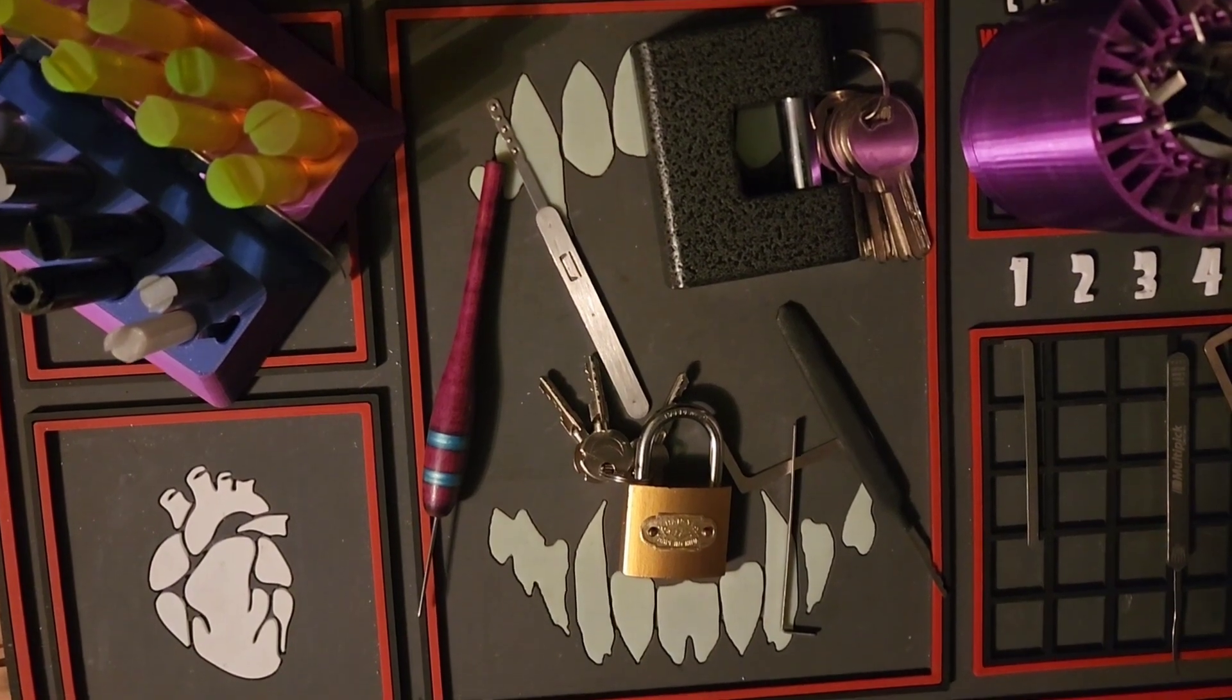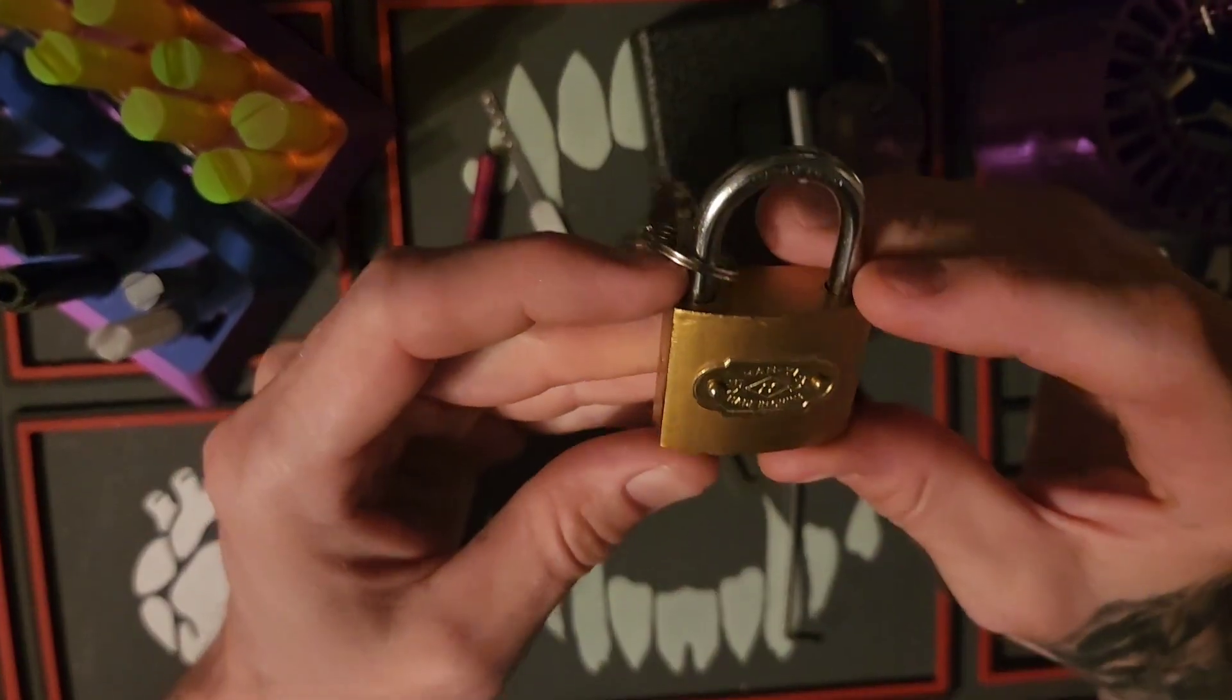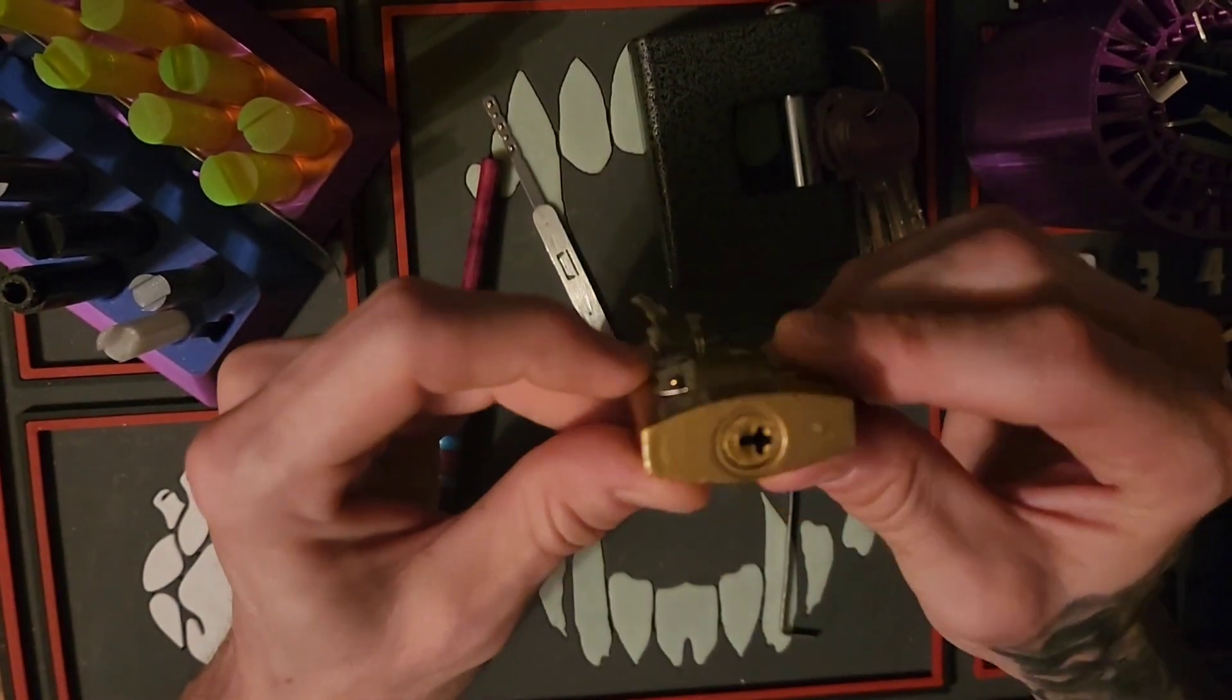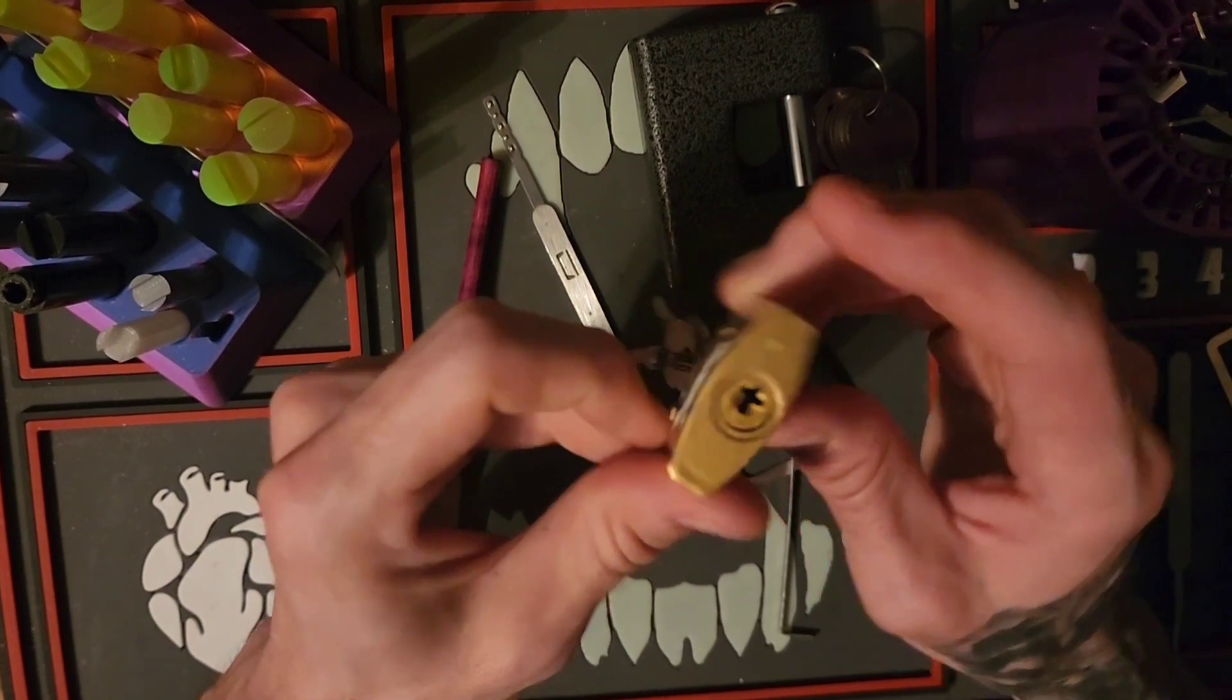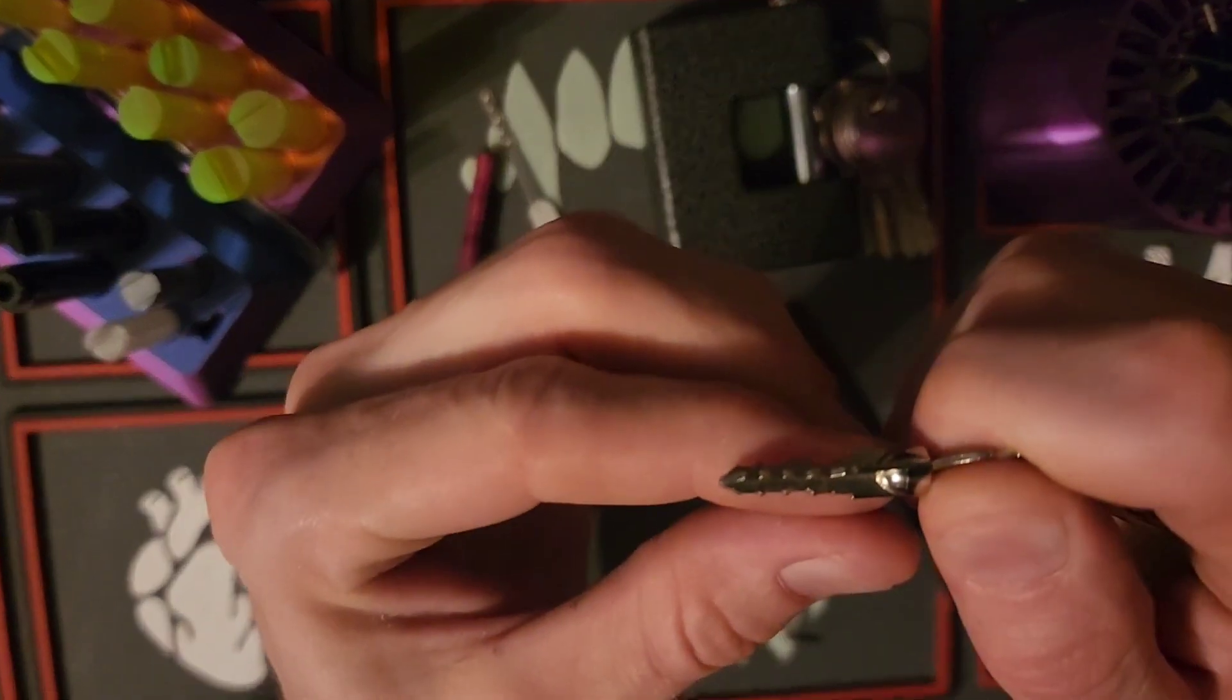Hey guys, welcome back to the channel. Lock Junkie here, thank you so much for joining me today. I've got this really neat Han Yi 40 millimeter brass padlock. It is a cross keyed padlock, the key looks like a cross.